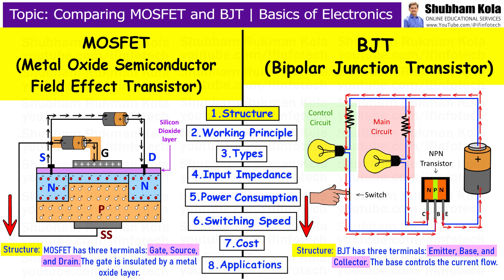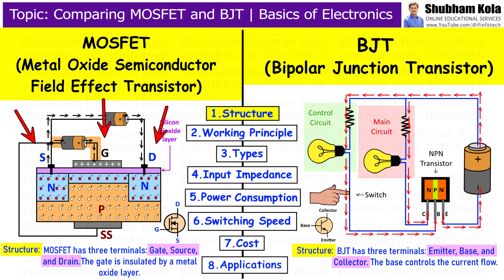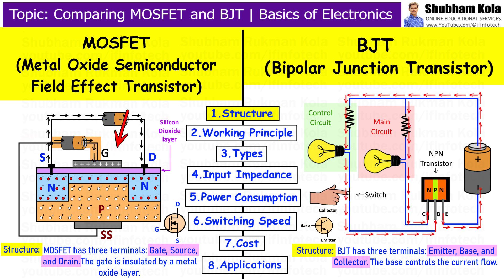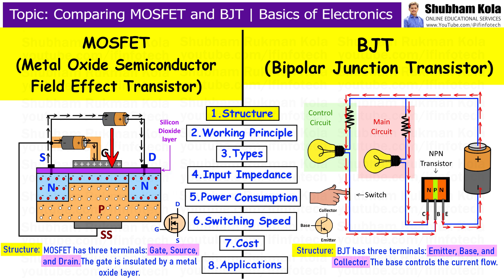First is structure. Starting with the structure, the internal construction of MOSFET and BJT is quite different. MOSFET has three terminals: gate, source, and drain. It works based on the electric field generated by the gate, which controls the current flow between the source and drain. MOSFET has a metal oxide insulator between the gate and channel, which prevents any direct current flow from the gate to the channel.